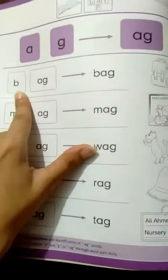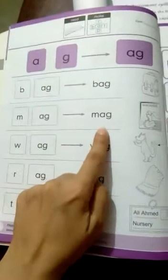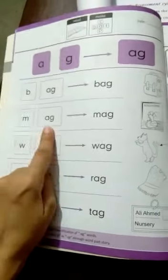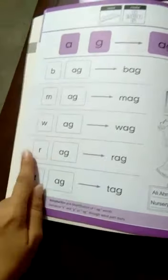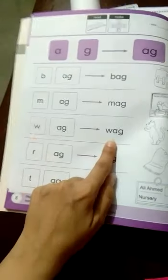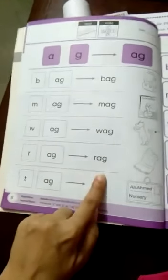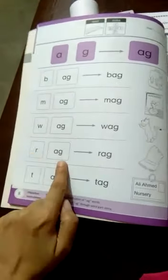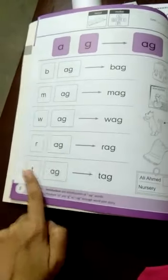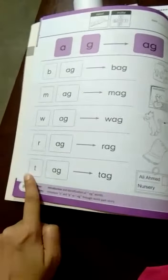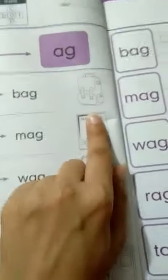Start kertate hain. B, ag, bag. B, ag, bag. M, ag, mag. N, ag, nag. V, ag, vag. V, ag, vag. R, ag, rag. R, ag, rag. T, ag, tag. T, ag, tag.